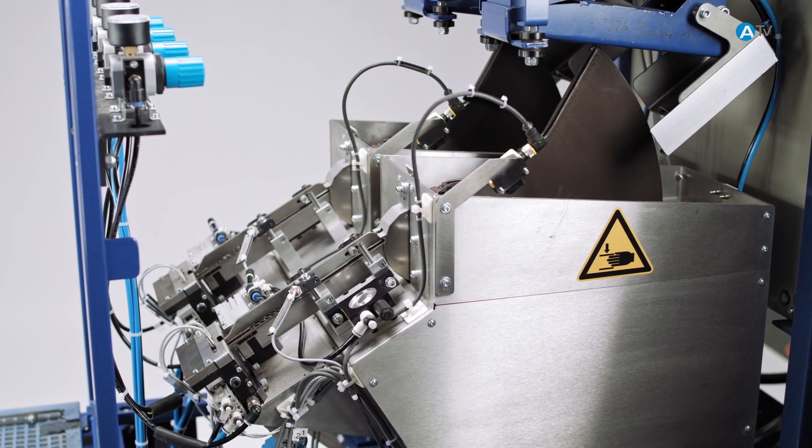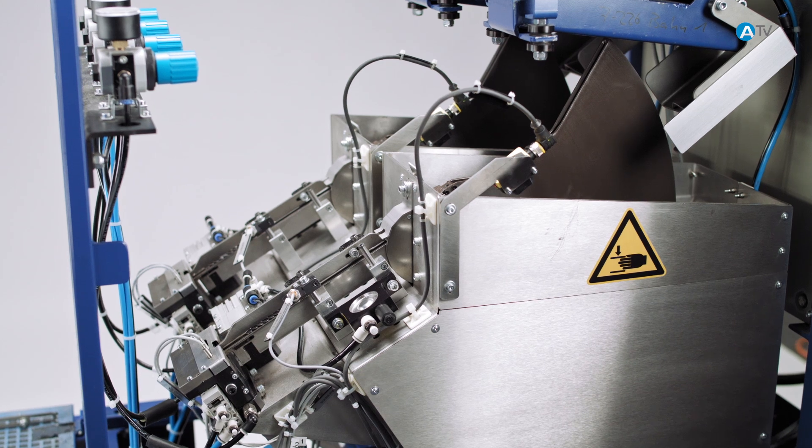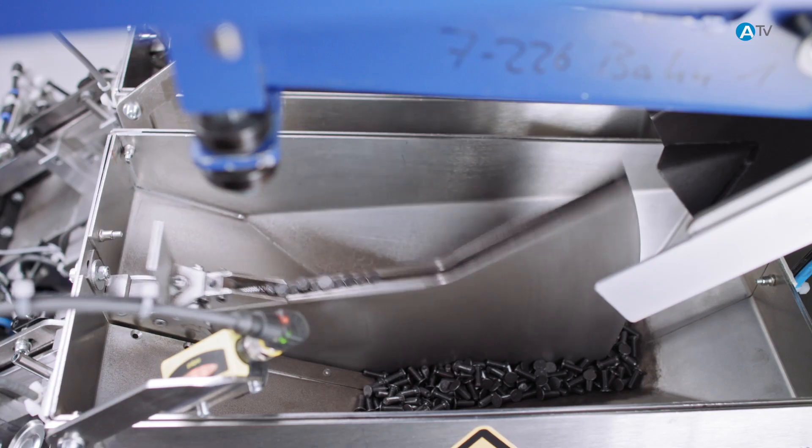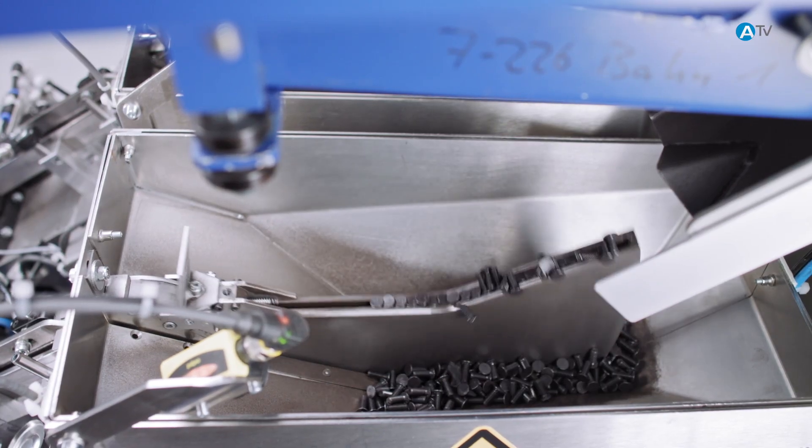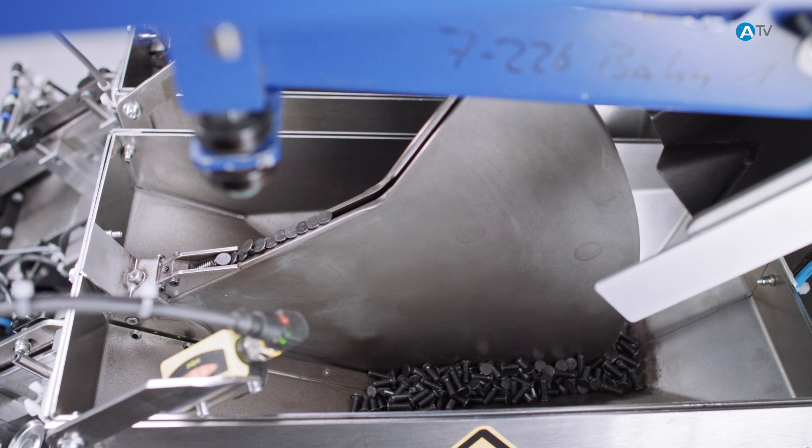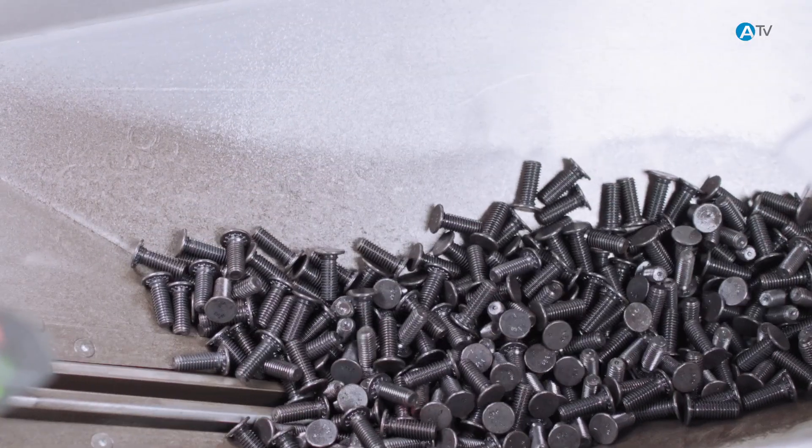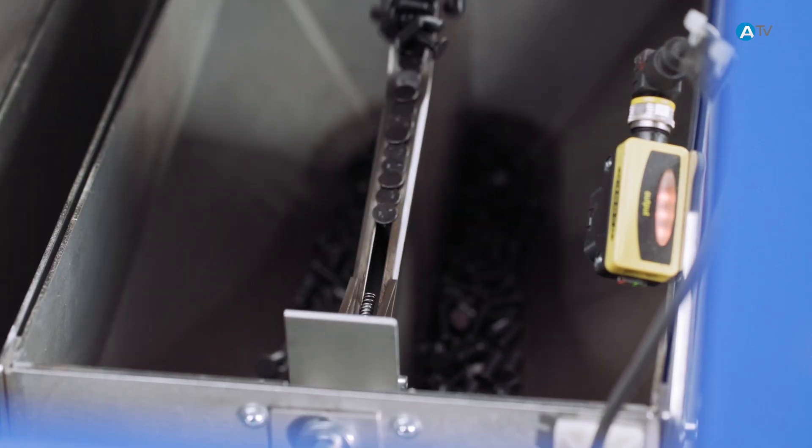Arnold Umform Technique offers a good alternative with its sword or segment feeder. Rather than a vibratory movement, it is the upward and downward movement of a segment-shaped rail or sword that separates and aligns the screws.